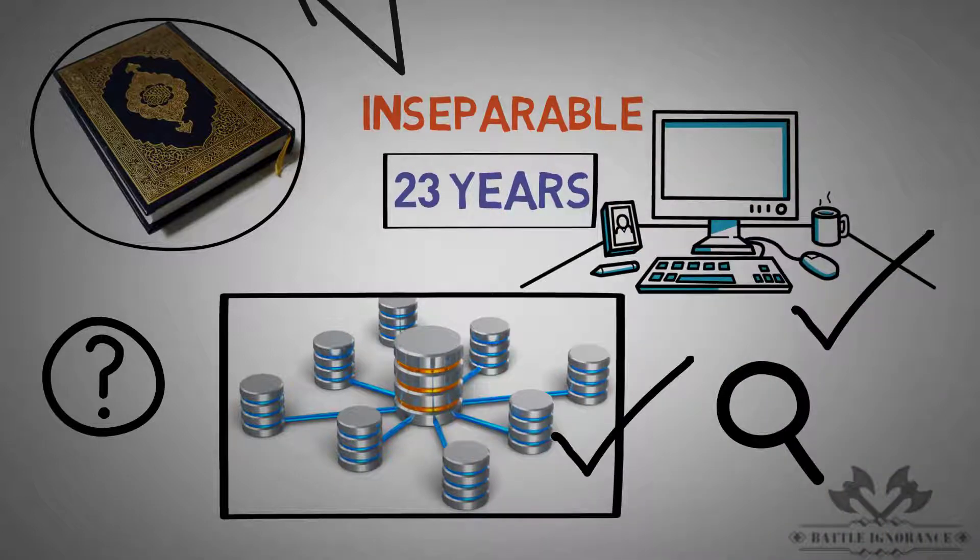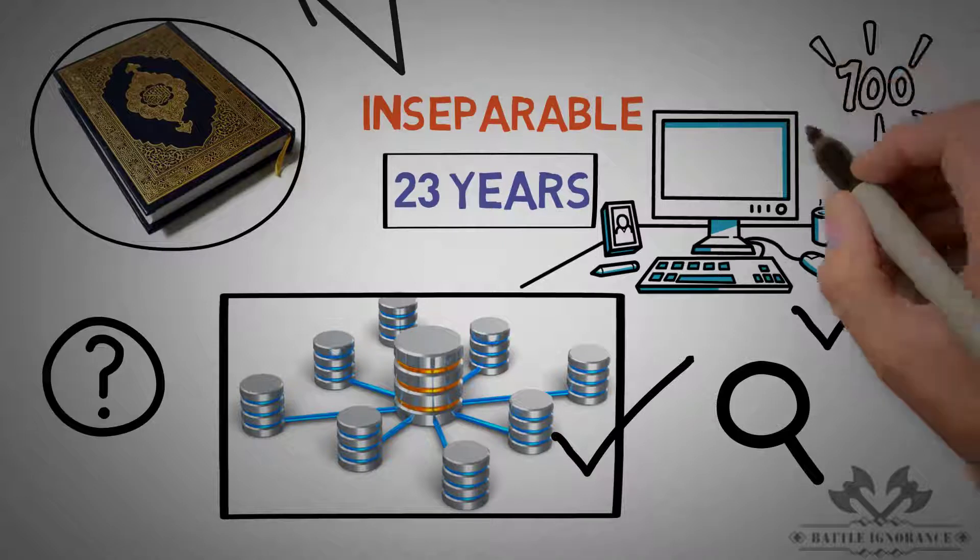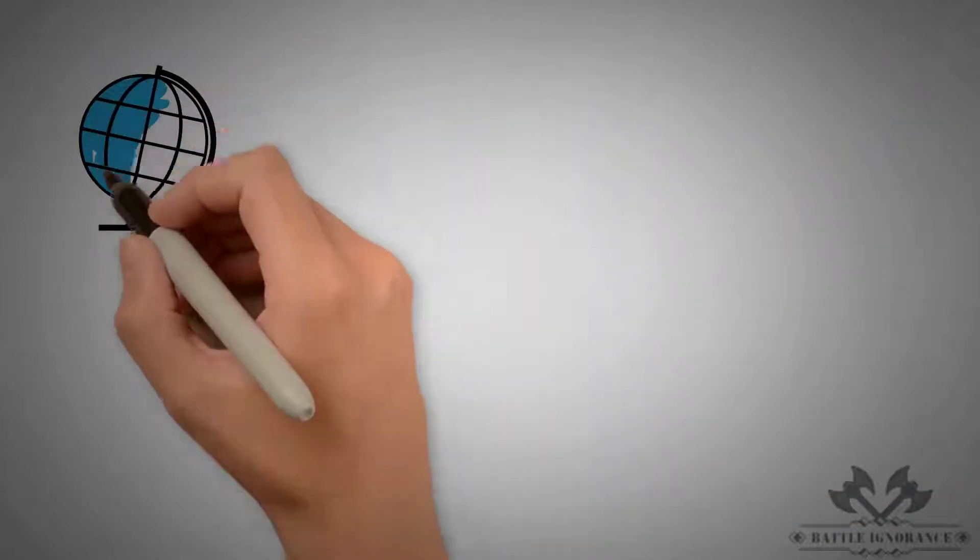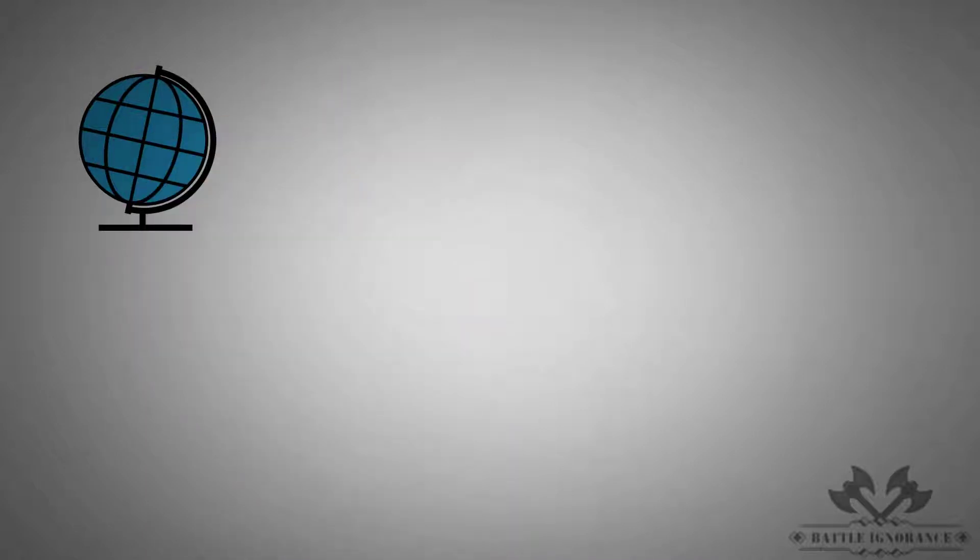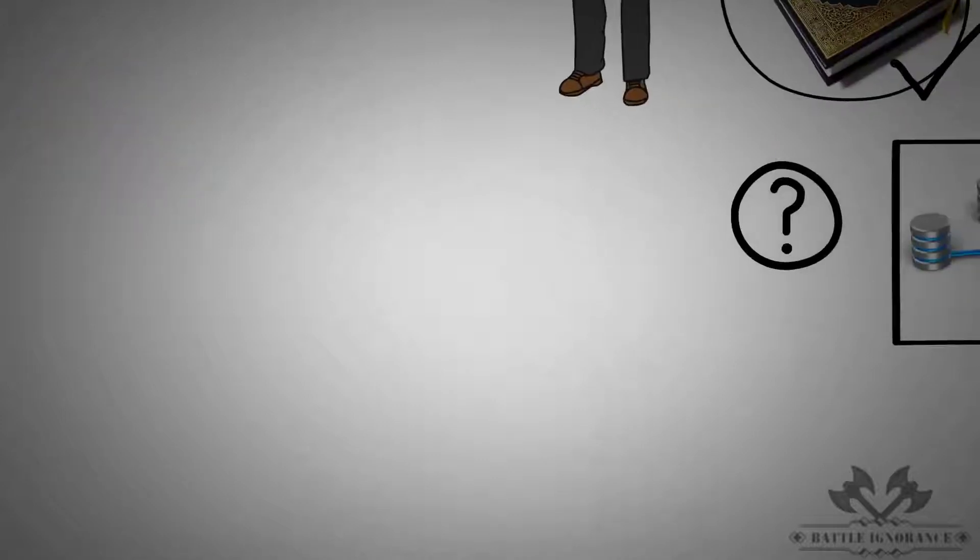So now, after 23 years of this book and centuries and centuries later, we have this book in book form. This book uses the word الدنيا. You know what الدنيا means? This world. This book uses the word this world 115 times. 115 times.